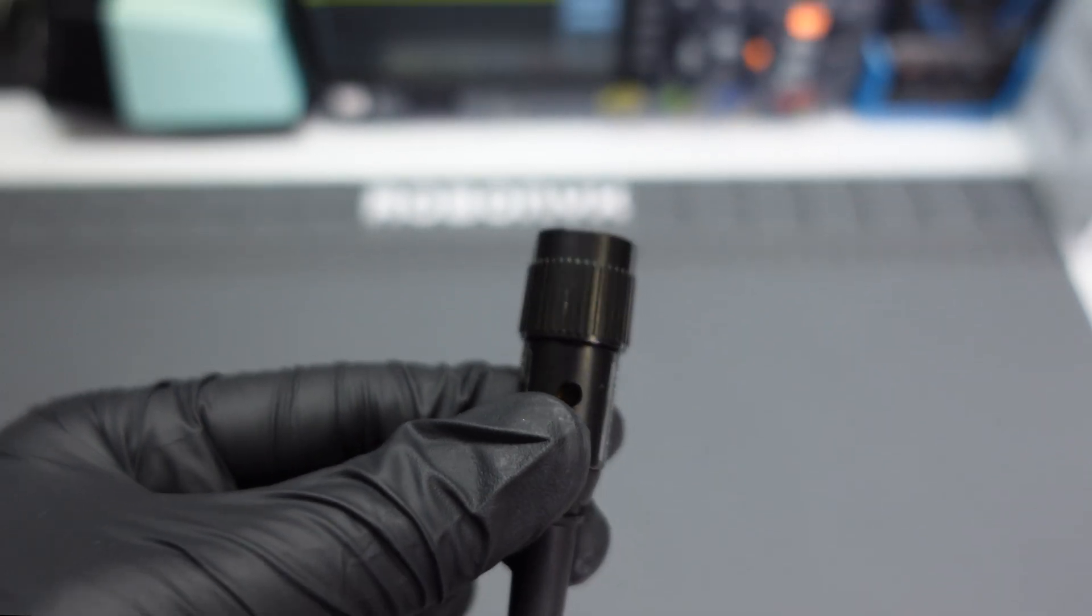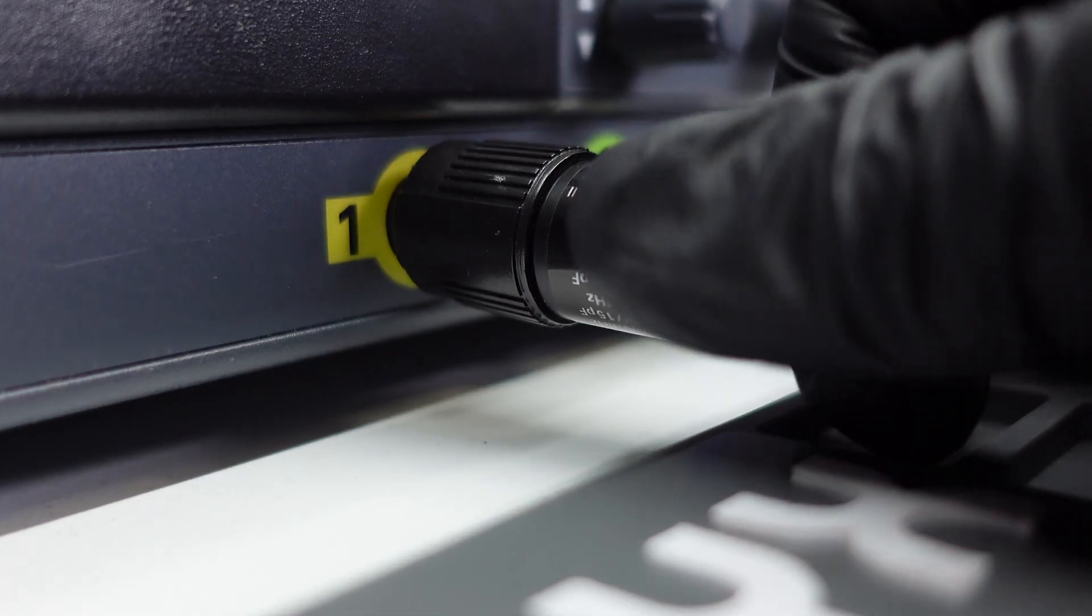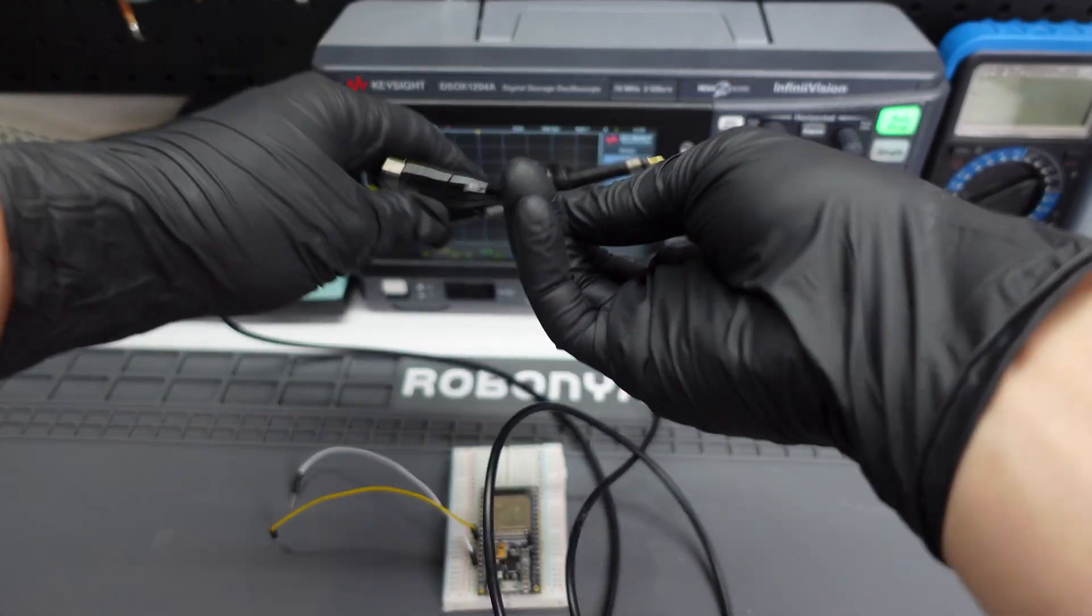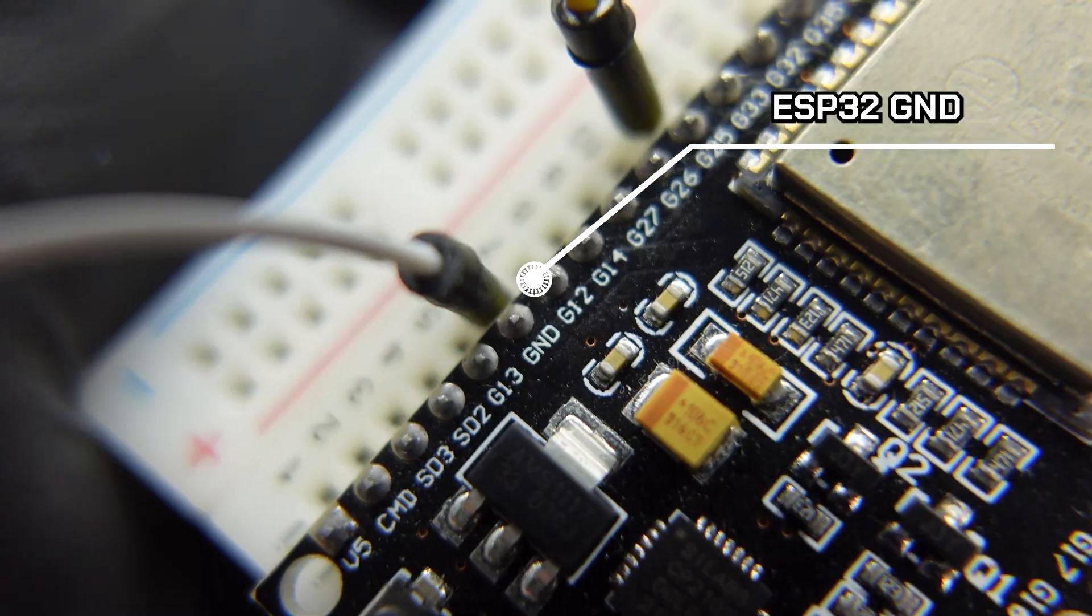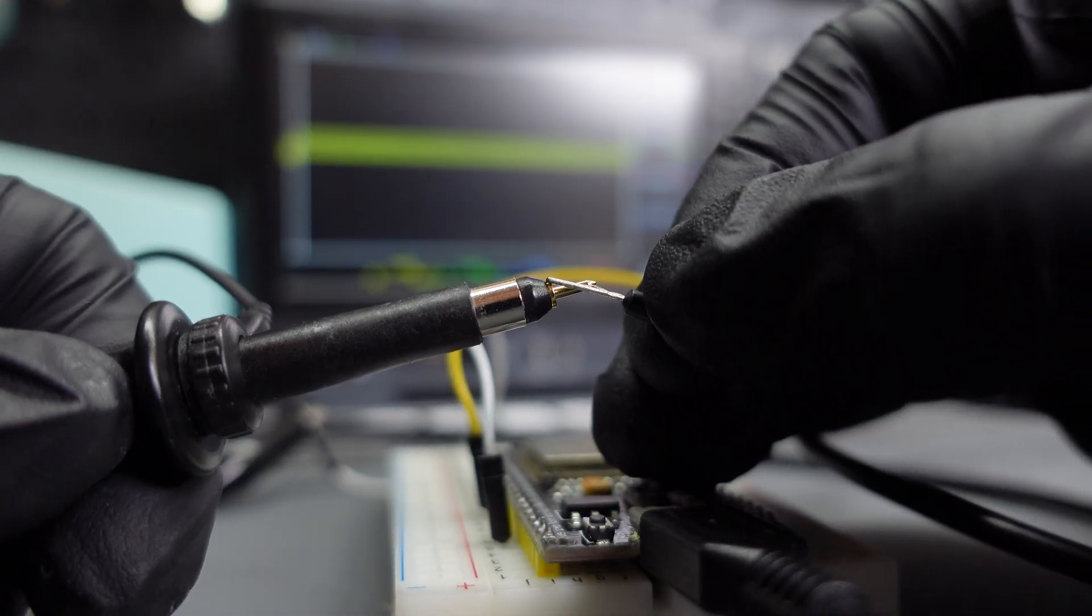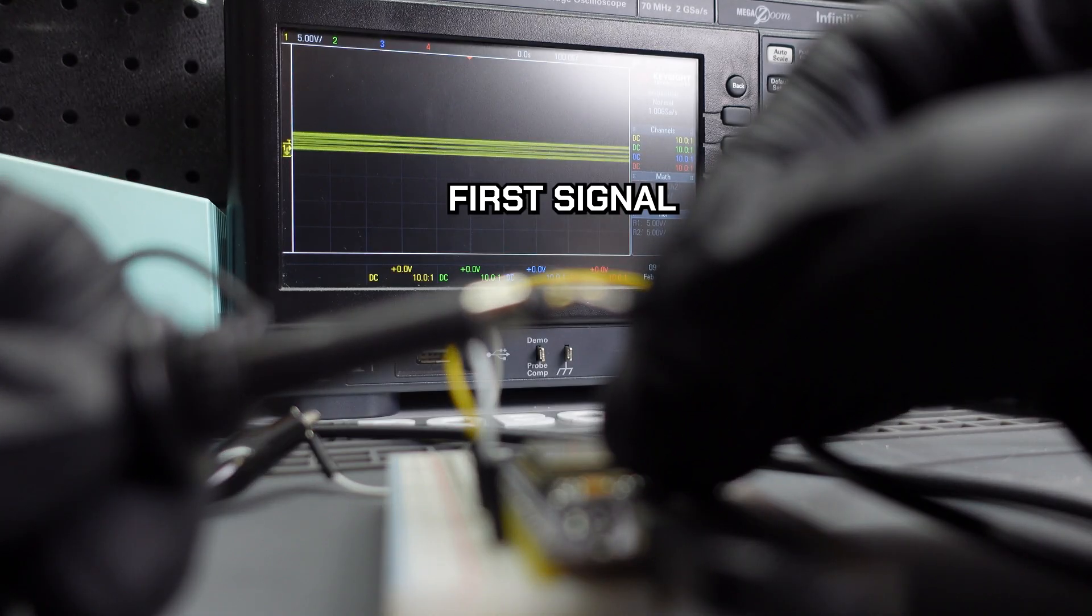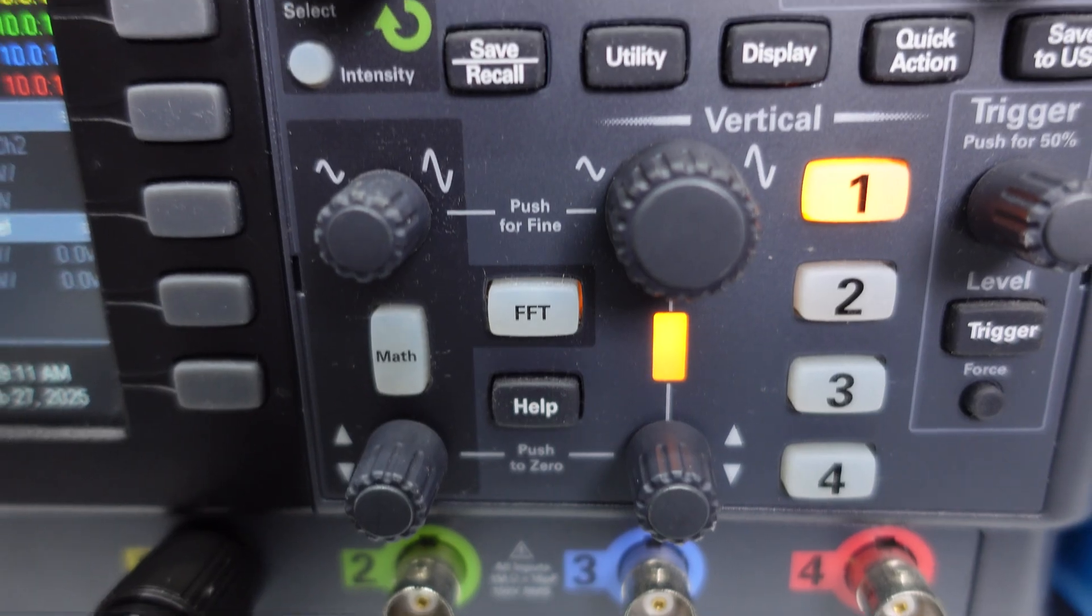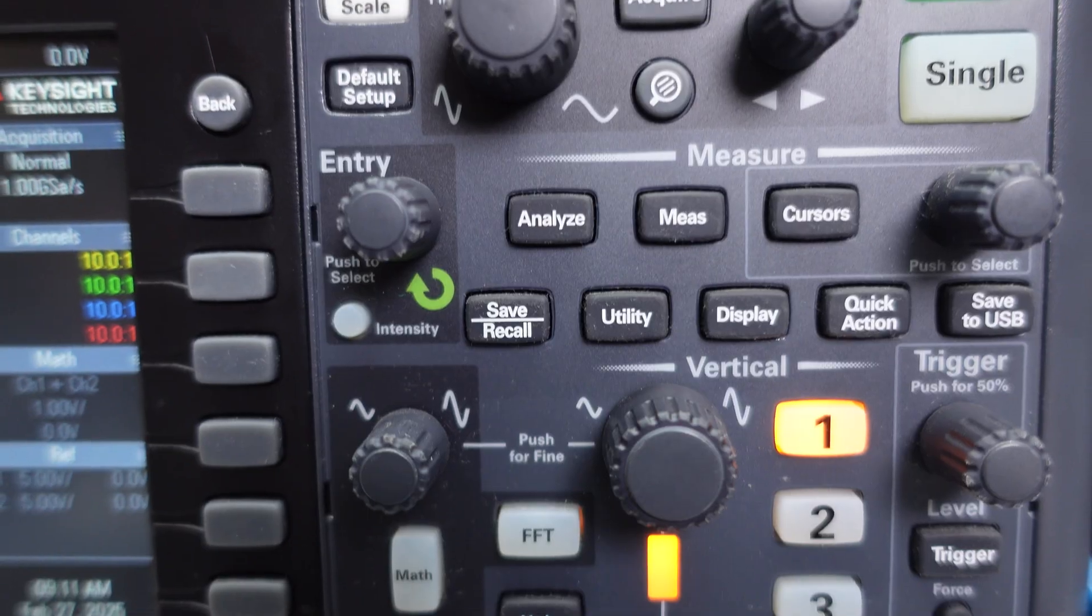Alright, so connect the probe to the oscilloscope by pushing it in and twisting it to lock it. Then connect the probe ground clip to the ESP32 ground, and touch the oscilloscope probe tip to pin 25. Now you should see it displaying something. It might not really make sense, and that's okay. We can use the controls to get a clear signal.